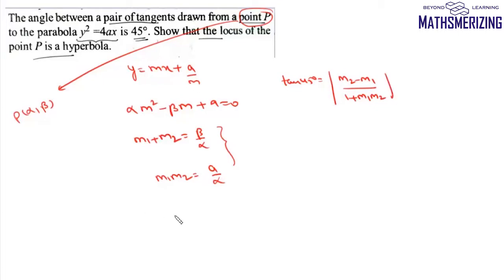We need to find m₂ - m₁. The modulus of m₂ - m₁ will be √[(m₁ + m₂)² - 4m₁m₂], which is √(β² - 4aα)/α.